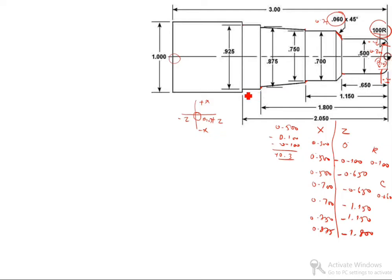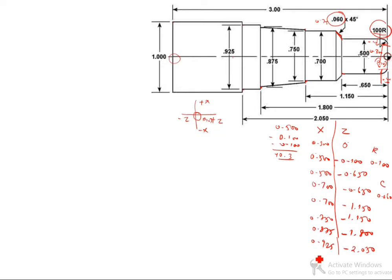You go with here: x value is 0.925. OR value is minus 2.050 — up to here finished. Then go with here: x value is 1, z value is 3. So x value is 1.000, OR value is minus 3.000 — up to here finished.